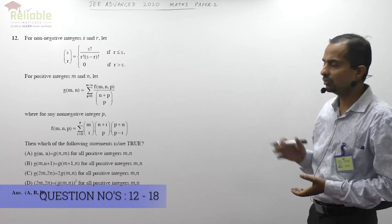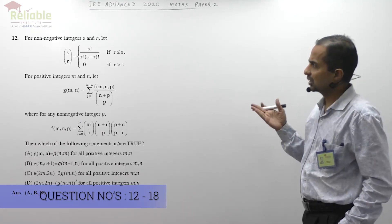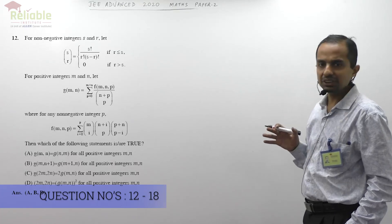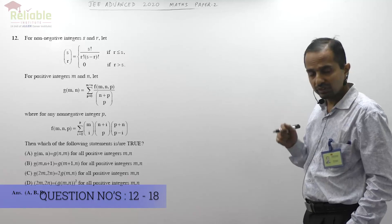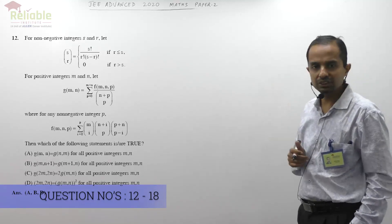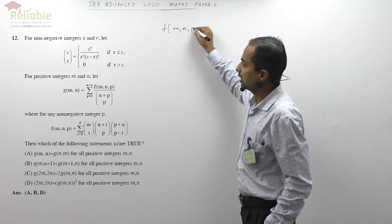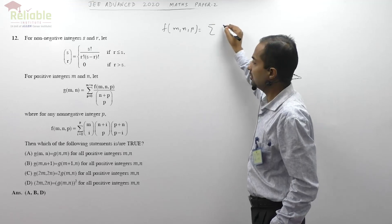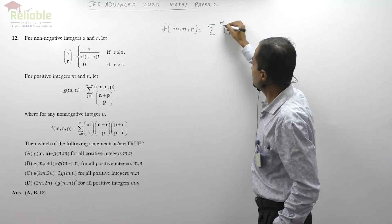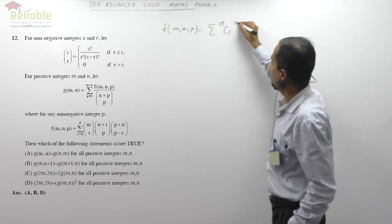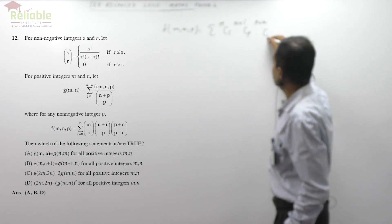Let's begin with question number 12 of paper 2. The nCr definition is given in the first part, and then there is a function f(m,n,p). First we have to evaluate f(m,n,p) and then evaluate g. So f(m,n,p) is sigma mCi times (n+i)Cp times (p+n)C(p-i), where i varies from 0 to p.